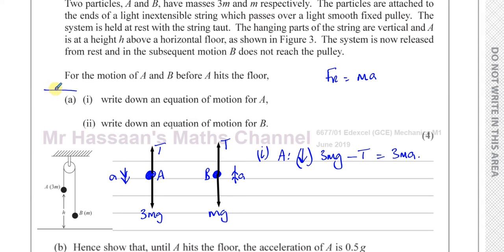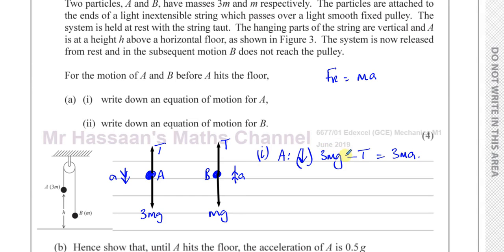So we can't say T equals MG here. If acceleration is perpendicular to a direction, then forces balance in that direction — but in the direction of motion, the net force equals mass times acceleration. So for particle B, taking upward as positive: T minus MG equals MA. Those are the two equations of motion for A and B.